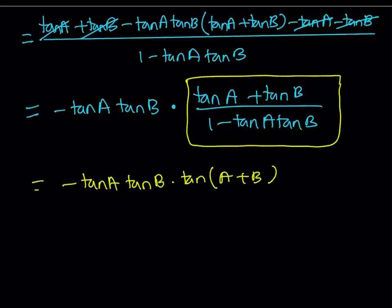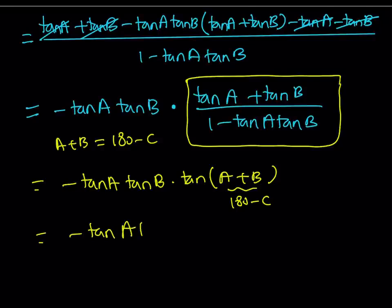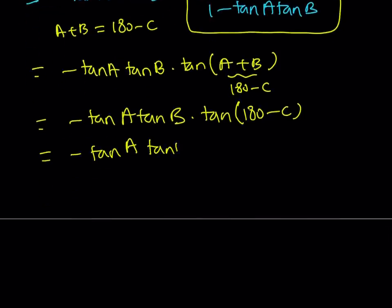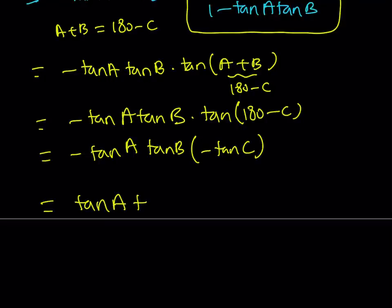We still haven't gotten our product yet, but we're almost there. Remember, A plus B plus C is 180, so A plus B can be written as 180 minus C. If I replace A plus B with 180 minus C, we get negative tangent A tangent B multiplied by tangent of (180 minus C). As we know, tangent of (180 minus C) equals negative tangent C, and when you multiply two negatives you get a positive — giving you tangent A times tangent B times tangent C.